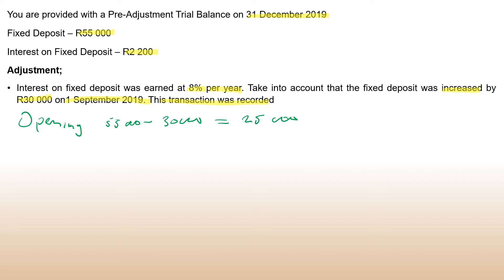We apply the opening balance by eight percent. 25,000 times eight percent gives us interest of 2,000. That is the interest on the opening balance.